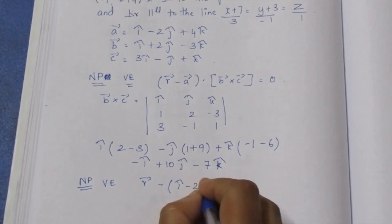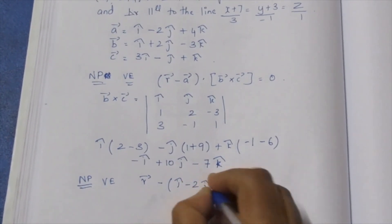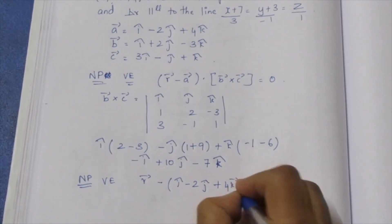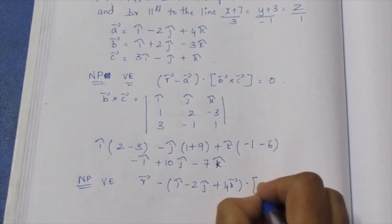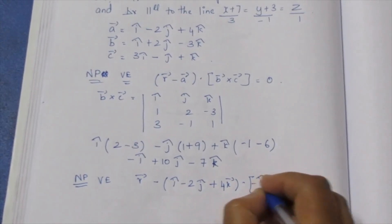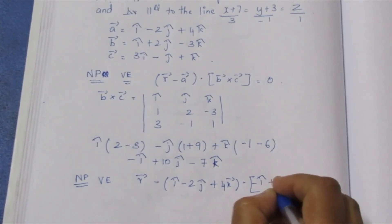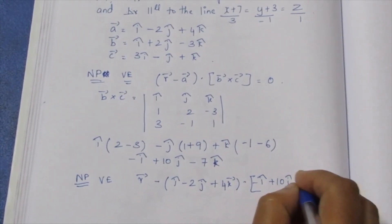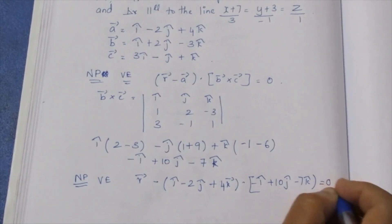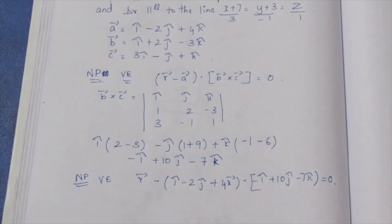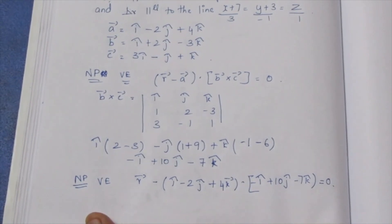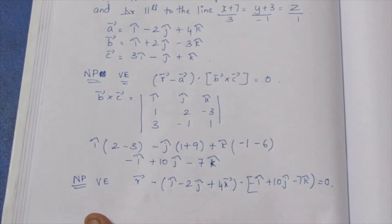Substituting, we get: (i-cap minus 2j-cap plus 4k-cap) dot (-i-cap plus 2j-cap minus 7k-cap) equals 0. This is the non-parametric form of the vector equation.